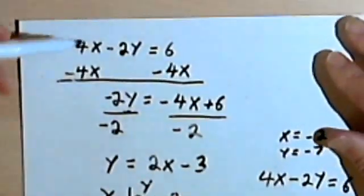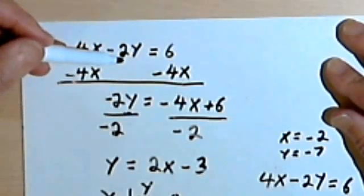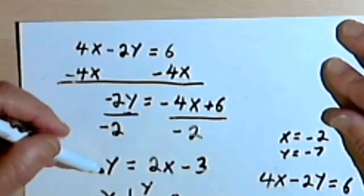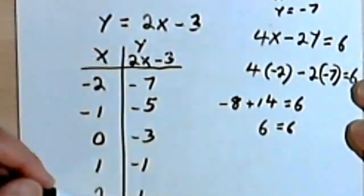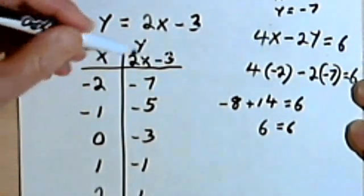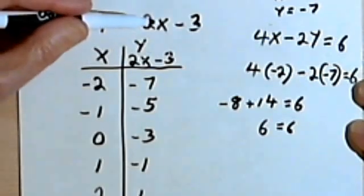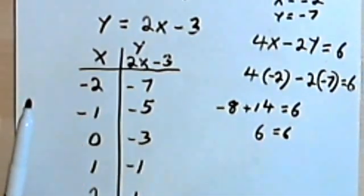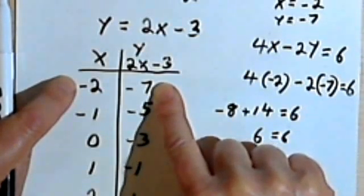Then we went on to a slightly harder equation. We had something like this, 4x minus 2y equals 6. And to make it easier to work with, we isolated the y. In other words, we solved the equation for y, and we said y equals 2x minus 3. And then once again we made a table of values. We called the first column x, the second column was y, but we were also able to call it 2x minus 3, since y equals 2x minus 3. And once again we had pairs of numbers. And each of those pairs was a solution to the original problem.